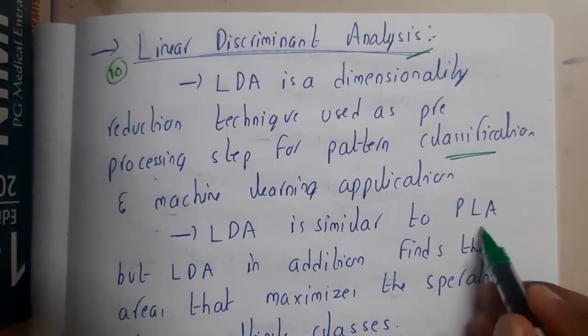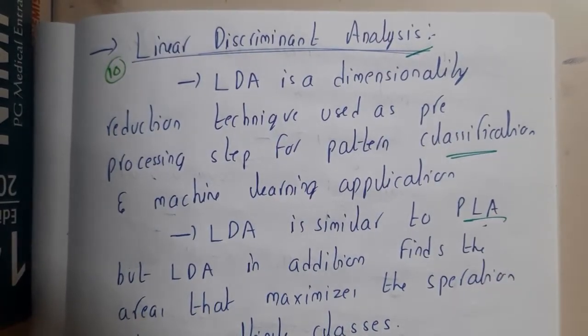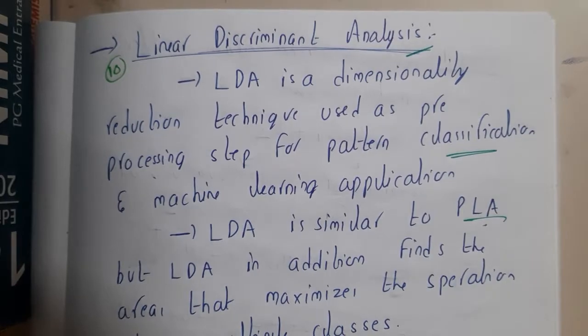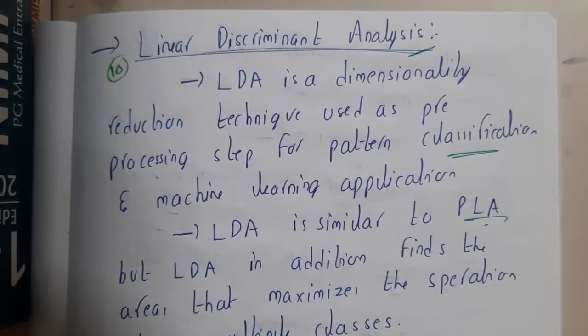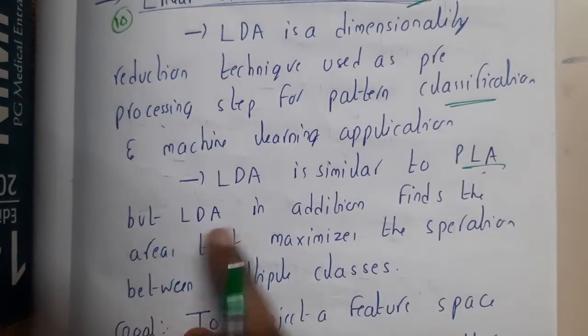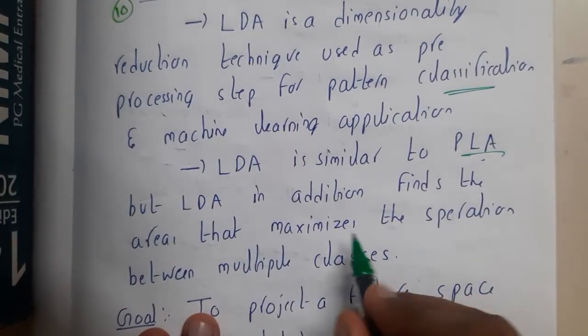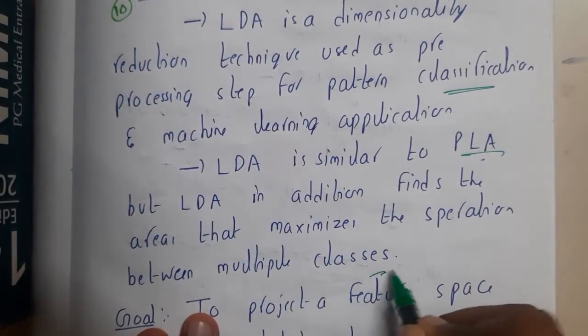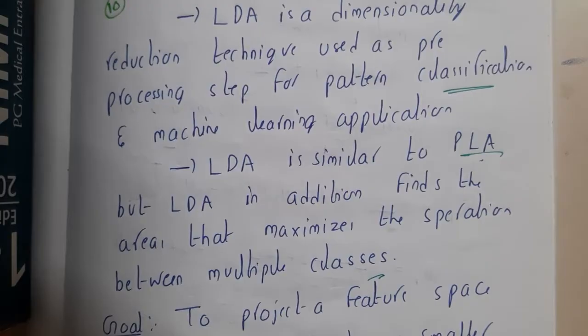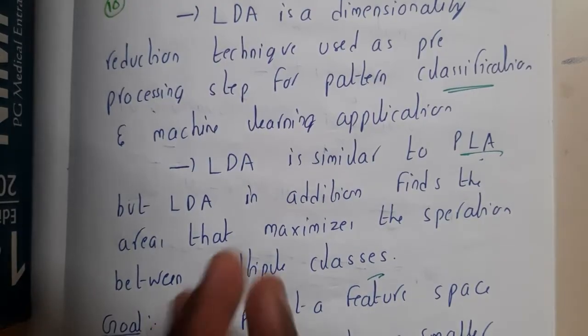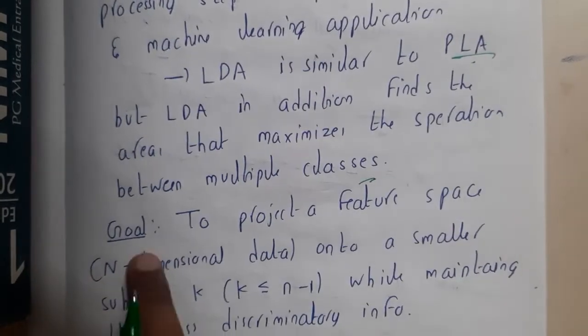The only drawback in PLA is that it is not going to consider the values criteria, like it will not take care about the values and their appearances, where LDA takes care of everything. LDA is similar to PCA, but LDA in addition finds the areas that maximize the separation between the multiple classes. So it is going to identify some differences.